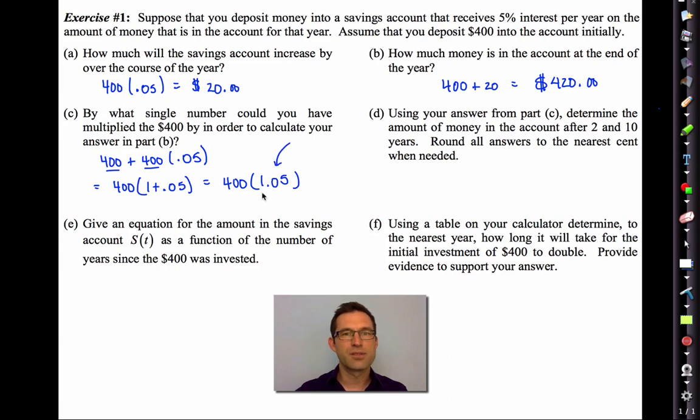Well, you should multiply by 1.05, but let's make sure we understand why. We've got the 400, and then we're multiplying by 400 times 0.05. So strangely enough, if we use factoring, we can factor a 400 out of both of these, being left with a 1 plus 0.05 or 400 times 1.05. There it is.